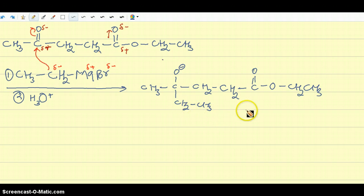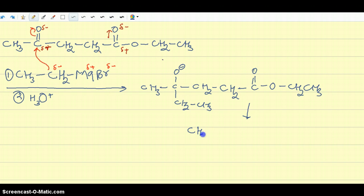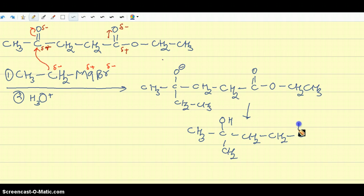The second step is acidification with aqueous acid, which serves two purposes: first, it acidifies the alkoxide, converting that oxygen into an alcohol group; second, it neutralizes any leftover Grignard reagent and any leftover magnesium in the reaction flask. The product you get after acidification contains CH₂CH₂, C double bond O, O, CH₂CH₃.